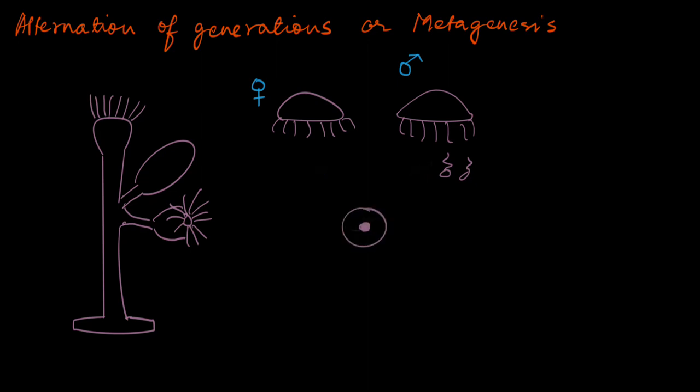The zygote grows up to form the larva. The larva moves and finds a place to settle down—it gets attached to a surface under the ocean and then slowly grows up to form the polyp form. So the medusas are always swimming around in the water, whereas the polyps are usually fixed at one place.